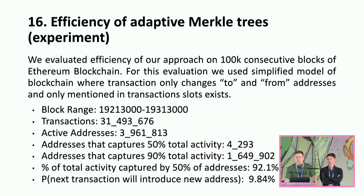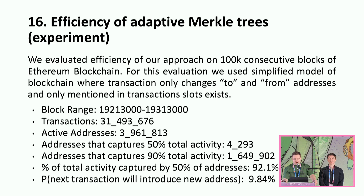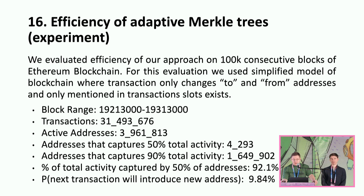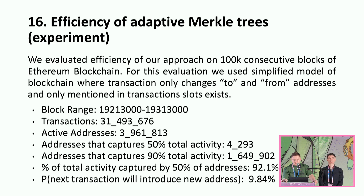We evaluated the efficiency of our approach on 100k consecutive blocks of the Ethereum blockchain. For the evaluation, we used a simplified model of blockchain where transactions only change to and from addresses, and only addresses mentioned in transaction slots exist. In that block range of 100k we have around 31.5 million transactions, 3.9 million active addresses, and the addresses that capture 50% of total activity were around 4k. Addresses that captured 90% of total activity was 1.6 million. The percentage of total activity captured by the top 50% of addresses is 92% of all on-chain activity, and the probability that a next transaction will introduce new addresses is 9%.